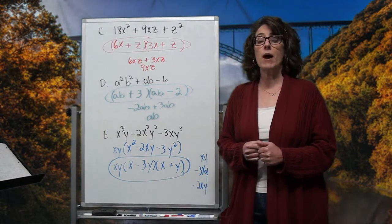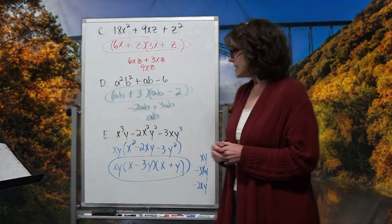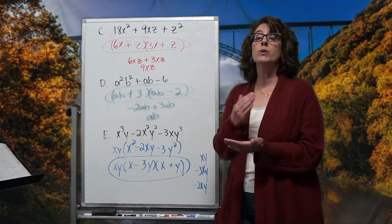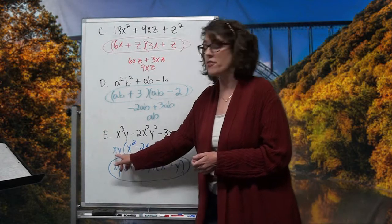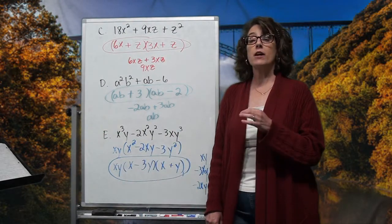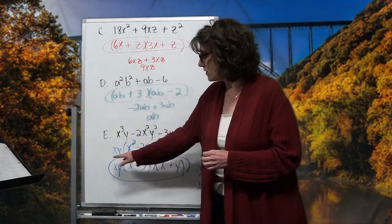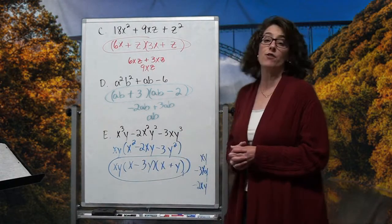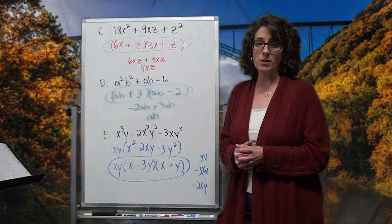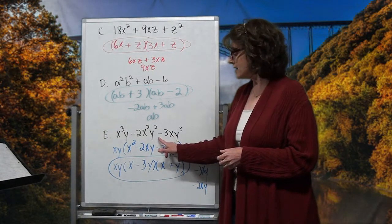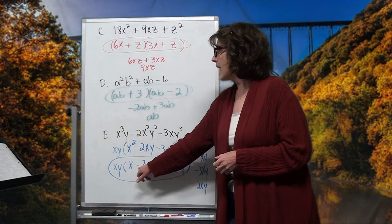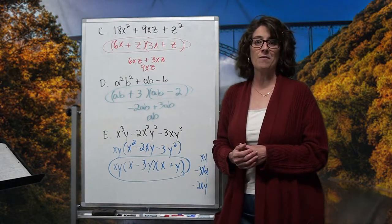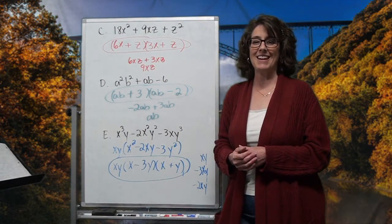Hopefully that helps you see that when it comes to factoring trinomials, yes, head for that double parenthesis — but only after you have factored out that common factor, that GCF. Once you factor the GCF out, then head for that double parenthesis. And if you have extra variables, they're going to work themselves out. The back sign tells you whether the signs are the same or opposites, and if they're the same, the middle sign tells you what they are. Have a great day.